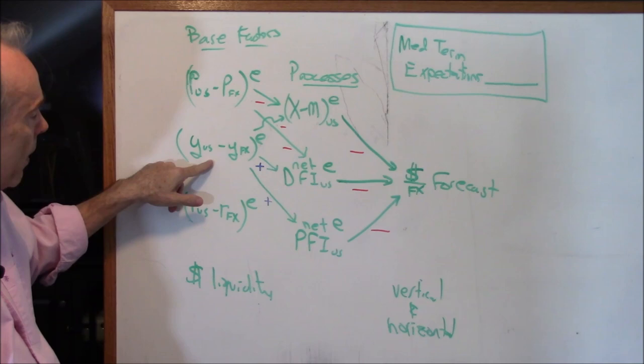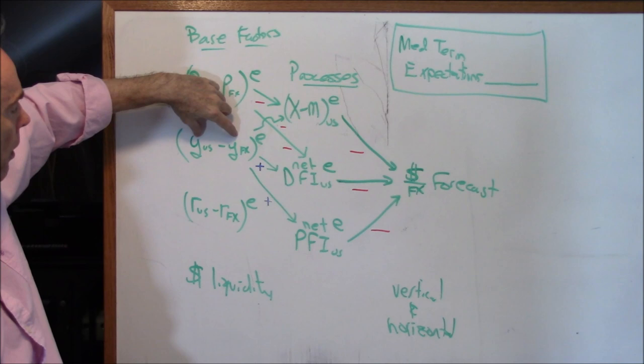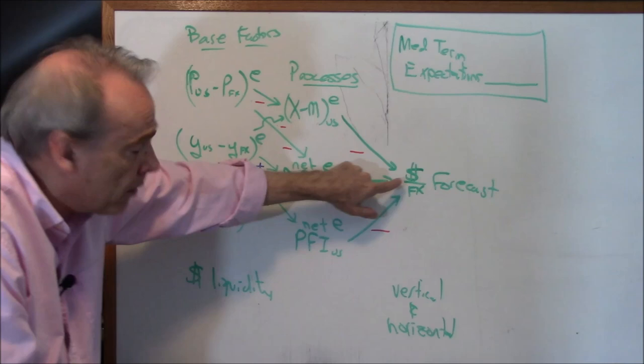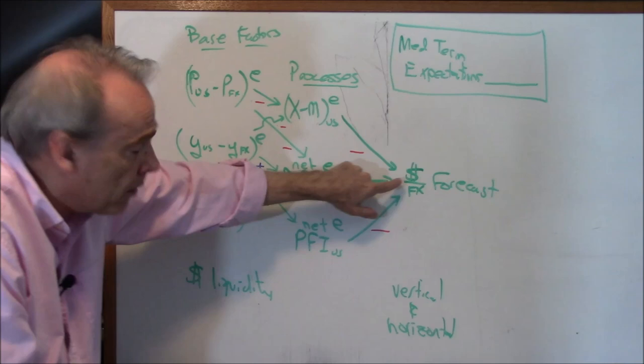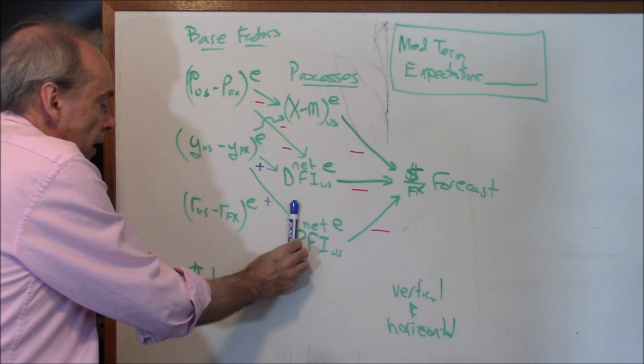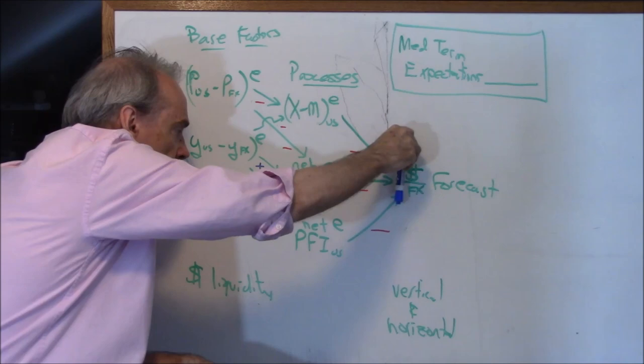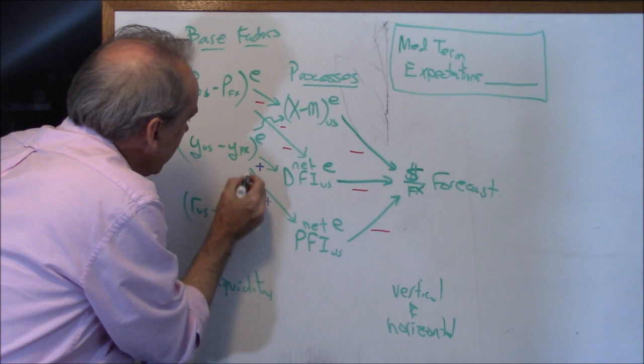GDP also feeds into portfolio financial investment. If the U.S. economy is growing fast, would you be interested in buying their stocks and bonds? Heck yeah. So if I expect the U.S. economy to grow faster than its trading partners, I expect the U.S. to attract a lot of portfolio financial investment — therefore I figure the dollar is going to appreciate. If GDP is going up, PFI is going up, then with a negative sign, the FX forecast goes down — that's a dollar appreciation (fewer dollars per pound).